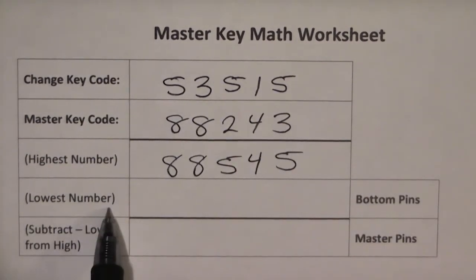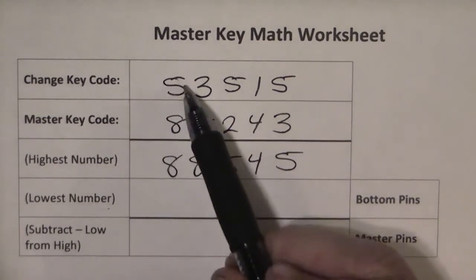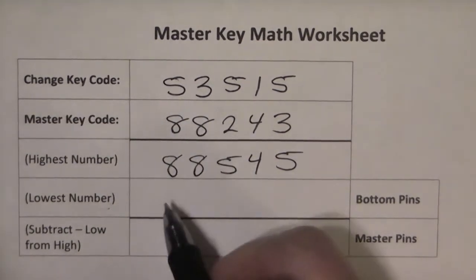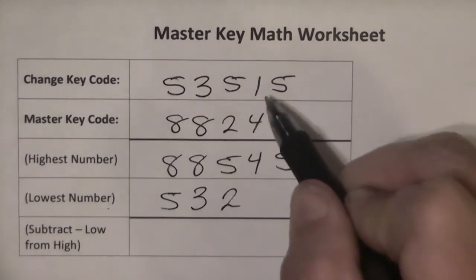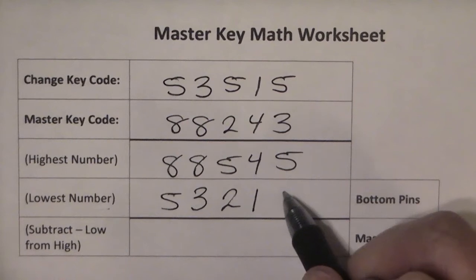The next step would be to find the lowest number of the two codes. 5 is lower than 8, then 3, then 2, then 1, and then 3.